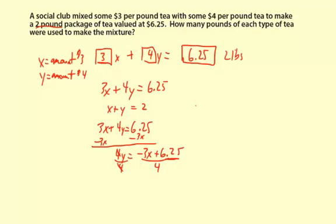Let's look at the second equation. X plus Y equals 2. Just subtract X from both sides to get the Y by itself, and you get Y equals negative X plus 2. Or it's 2 minus X, if you want to think of it that way.